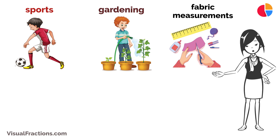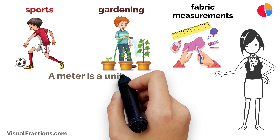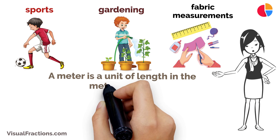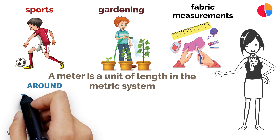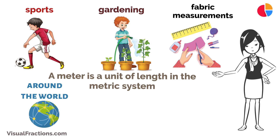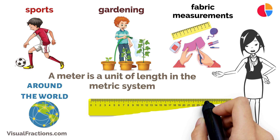Let's dive into the units first. A meter is a unit of length in the metric system, widely used around the world. A yard, on the other hand, is a unit of length used primarily in the United States and the United Kingdom.